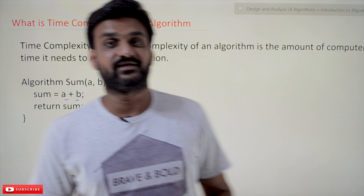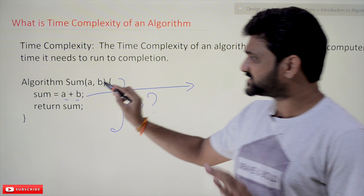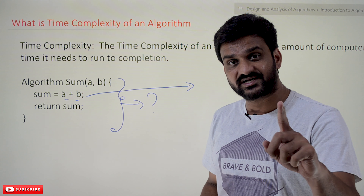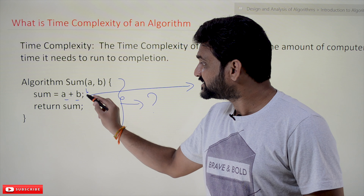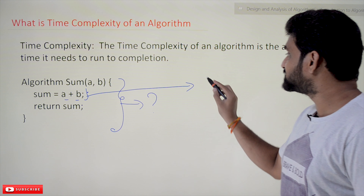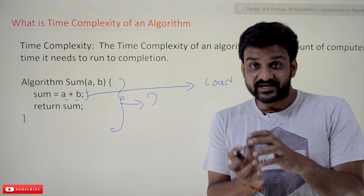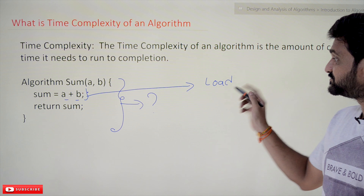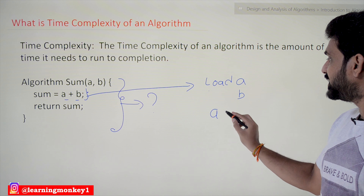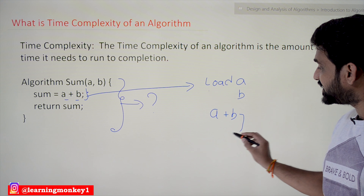How to calculate it — for example, if you consider only this one line of code, it looks like a single instruction, right? But in order to execute this one single line of code, how many micro-operations will it perform? First, it is going to load a, then load b — these concepts we have discussed in our computer organization course. So first we have to load a, then load b, then perform a plus b in the arithmetic logic unit.